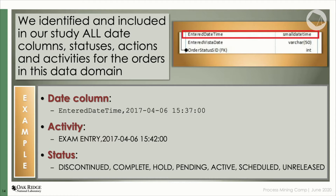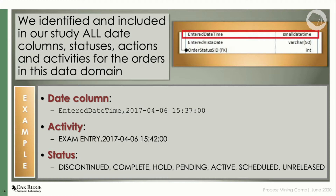Our approach starts with the identification of actions, status updates, and transaction dates in clinical order processes through their life cycles. When we started this study, we didn't know which features were relevant and which were not, so we decided to include them all. We selected all columns that are date types in the given data domains — easy to identify because the date name is appended to the column name. We also included columns that store activities or status values, hoping to identify steps in the process.